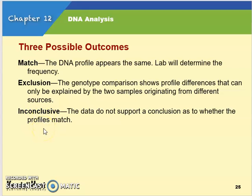There are three possible outcomes from DNA analysis. A match means the DNA profile appears the same, and the lab will look at charts to determine the frequency of that combination. Exclusion means the genotype comparison shows profile differences that can only be explained by the samples originating from different sources. Inconclusive means the data does not support a conclusion as to whether or not the profiles match.